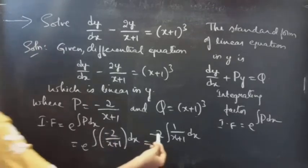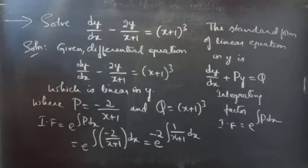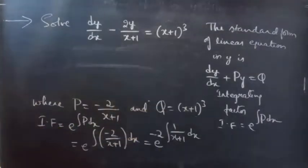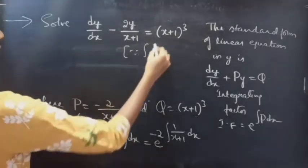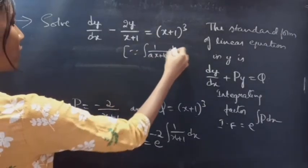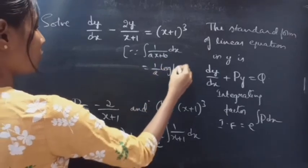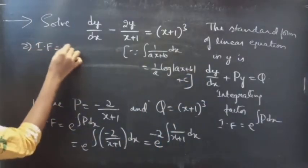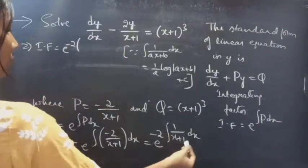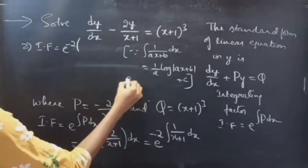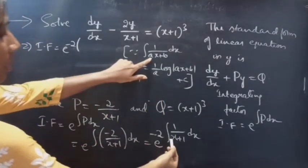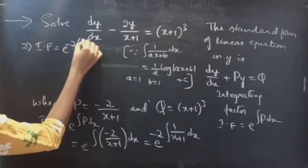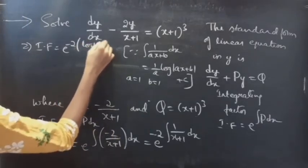Here minus 2 is a constant, so we write it outside the integral. We know that ∫ 1/(ax+b) dx = (1/a) log|ax+b| + C. For a equals 1 and b equals 1, we get (1/1) log|x+1|, that is log|x+1|.